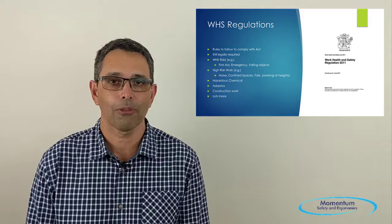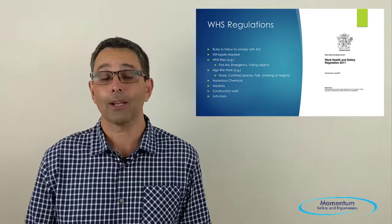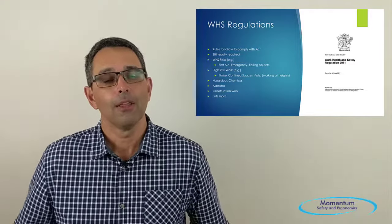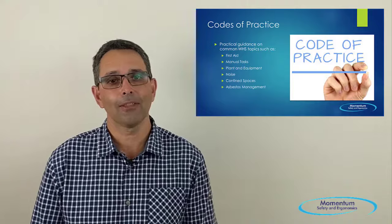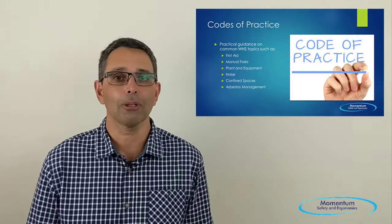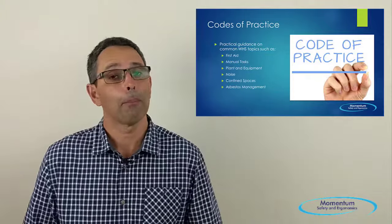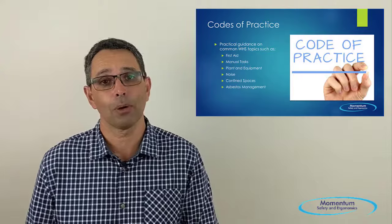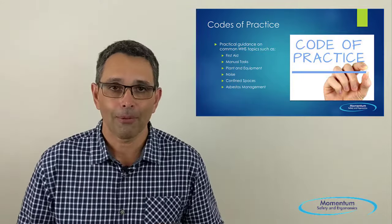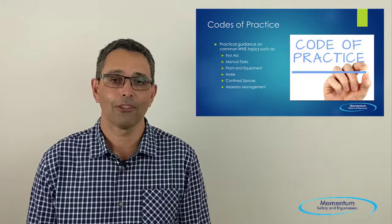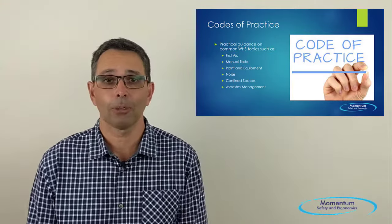There's a lot of information in the work health and safety regulations, and frankly it's hard to find, and even when you do find it, it's not always easy to read. The codes of practice, on the other hand, are much easier. They are distinct and discrete documents covering topics such as first aid, manual tasks, noise, and confined spaces. The codes of practice are written in plain English but also include references to the acts and regulations where required. So hands down, the codes of practice are the best place to go if you're looking for information on health and safety legislation and best practice on a particular topic.